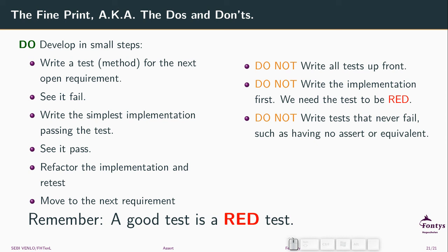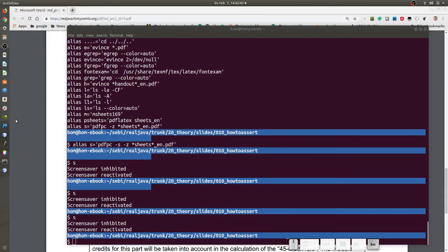The bottom line is: a good test is a red test. You must always be able to make that test become red again. You must be able to break a piece of code, and if this code is broken and you rerun the tests, the test should say it's broken.